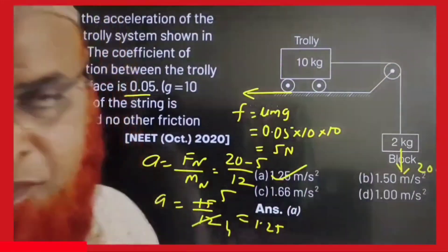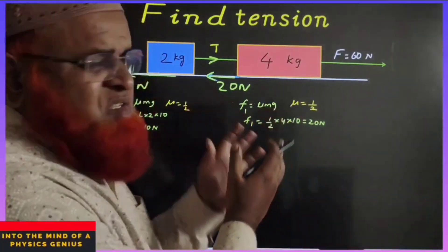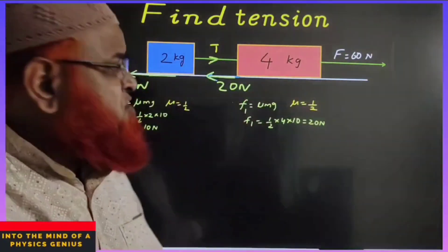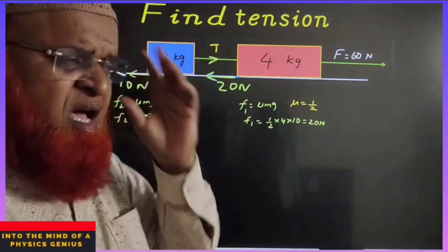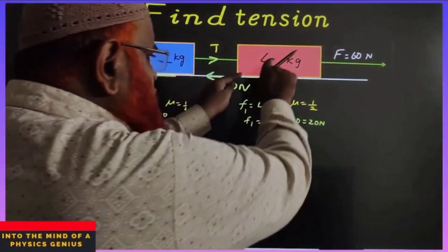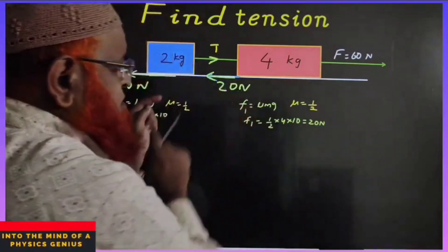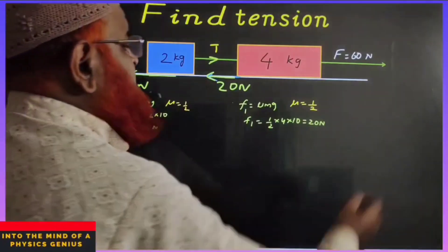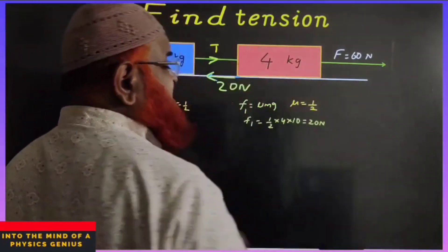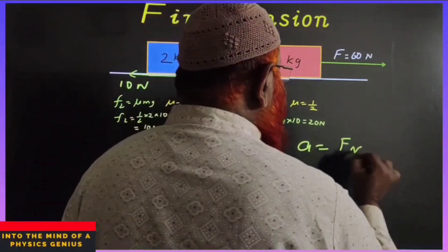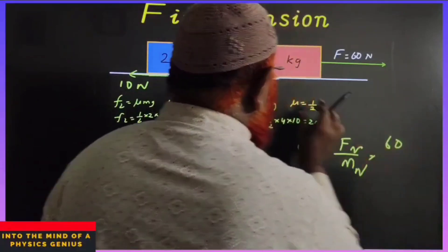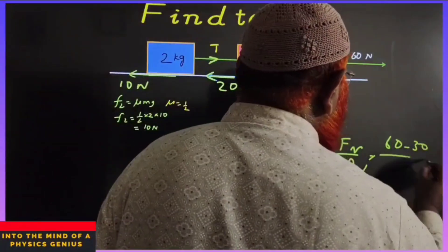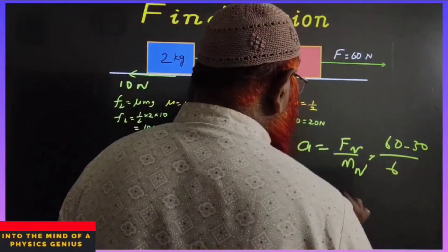When 16 newtons is acting on 4kg and 2kg blocks moving with the same acceleration, we need to find the tension between the two blocks. First find friction on each block: μmg for the 4kg block is 20 newtons, and for the 2kg block is 10 newtons, since μ = 1/2. Acceleration is net force by net mass: 60 minus 30 (total friction 20+10) divided by 6 (4+2) equals 5 m/s².